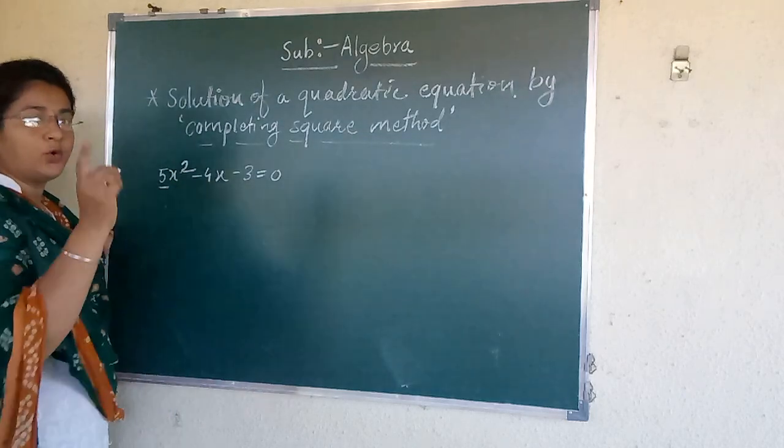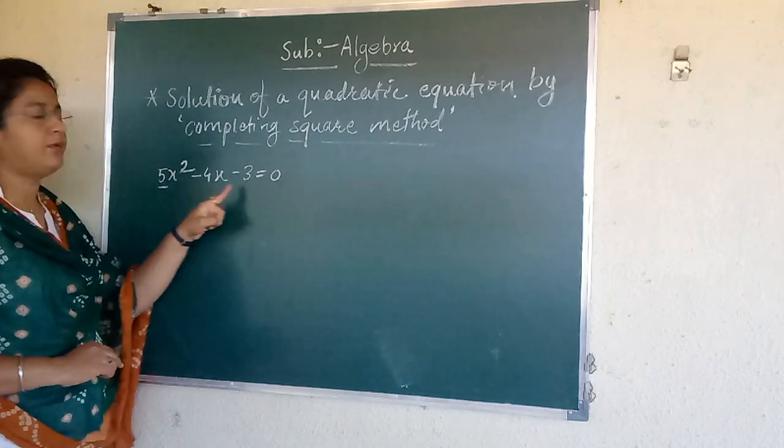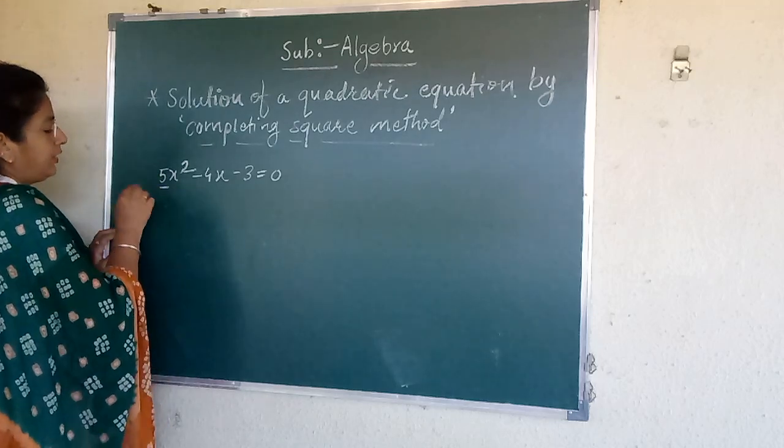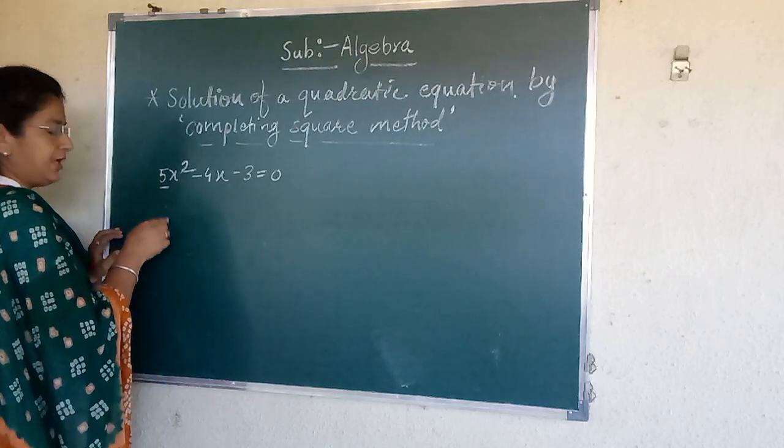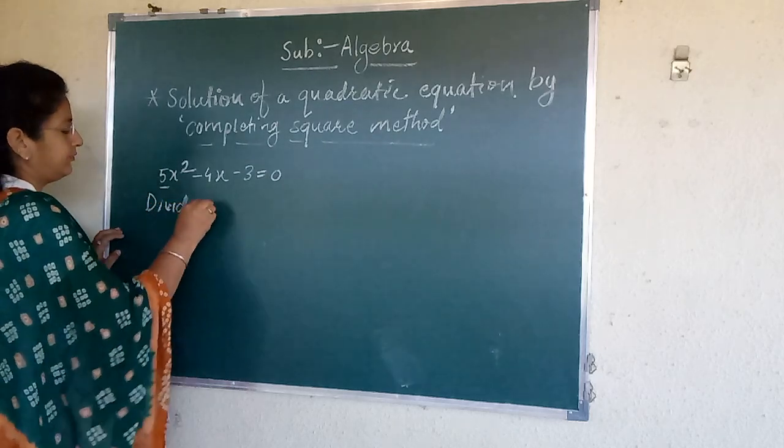First we have to make the coefficient of x² equal to 1. For that we have to divide each term by 5. So after dividing 5 here we will get x². We will write here dividing we get.